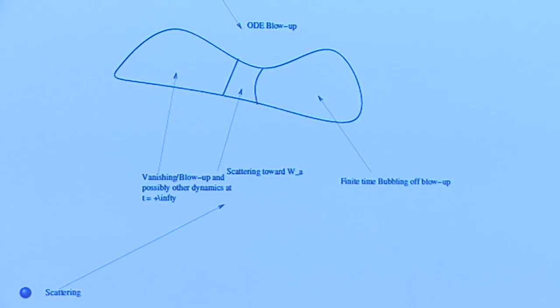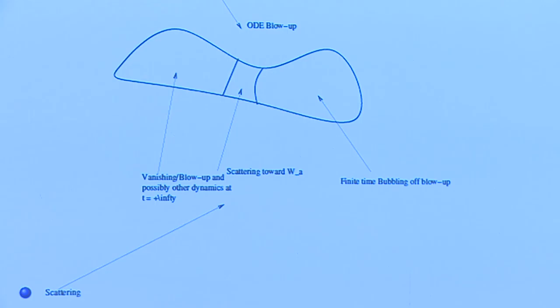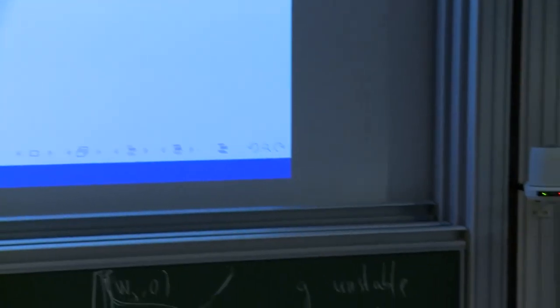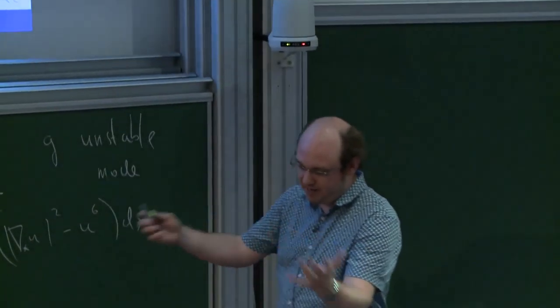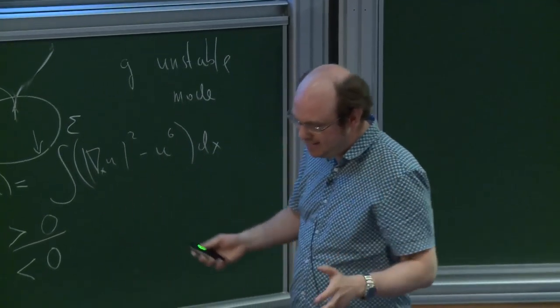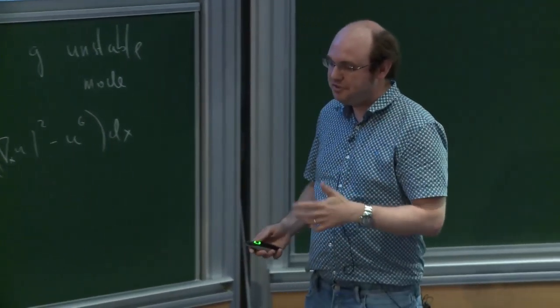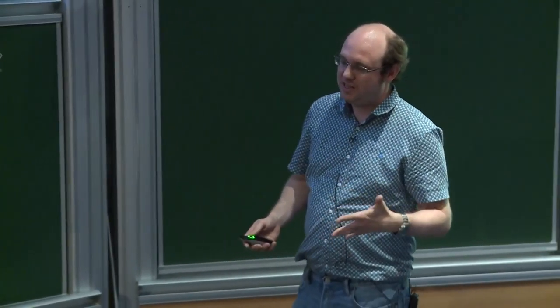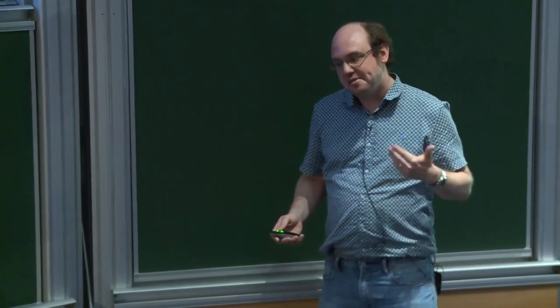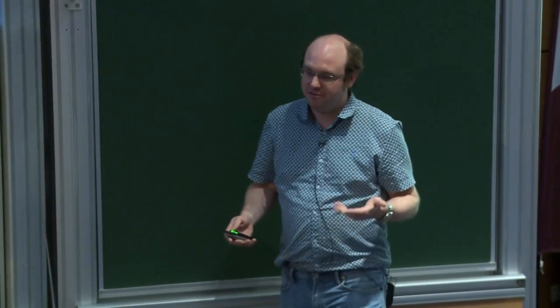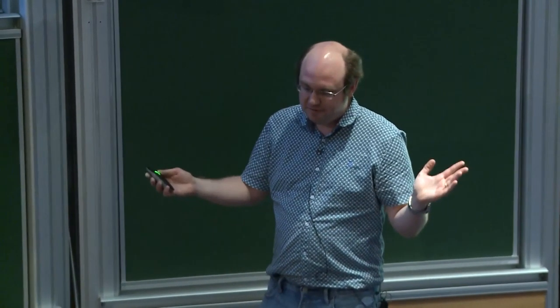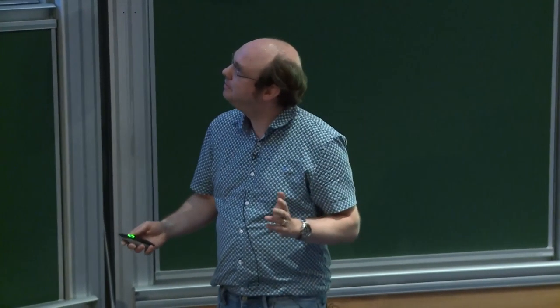This may seem like a very academic question, but remember: if you transplant this question to critical wave maps, then you don't have a co-dimension one hypersurface — you're generic, your type 2 is anything you get. The techniques you develop to answer this question may help you better understand the stability of blow-up for critical wave maps.